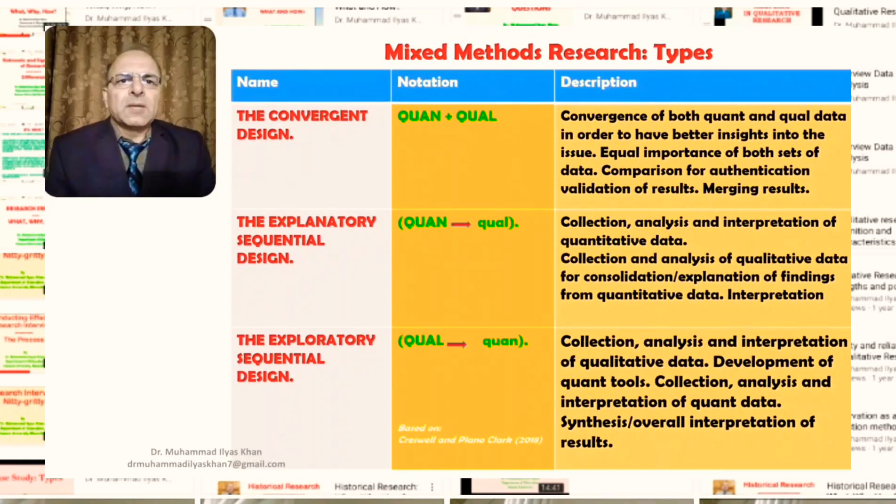The convergent research design has equal emphasis on the quantitative part of the design and the qualitative part. There is convergence of both quant and qual data in order to have better insights into the issue. Remember that mixed method research design is essentially an outcome of the pragmatist approach to research, which actually means that the ends of research are more important than the means.